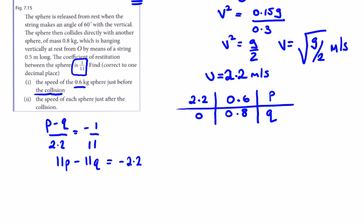I get 5p - 5q equals -1 for my first equation.